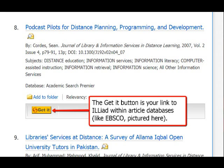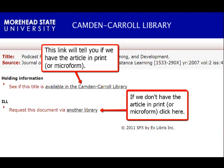In journal article databases, look for the yellow Get It button. The Get It button will search for the full text of an article in other databases, or for a print copy of the article here in the library. However, sometimes the library has neither. In these instances, the Get It button will provide you with a link to the Iliad request form.